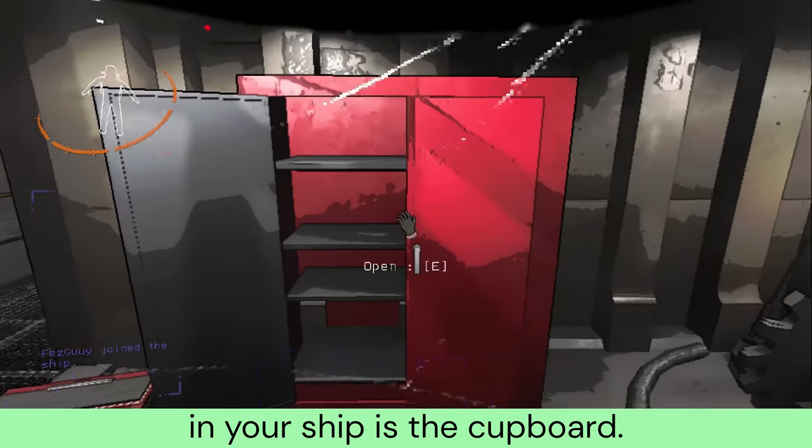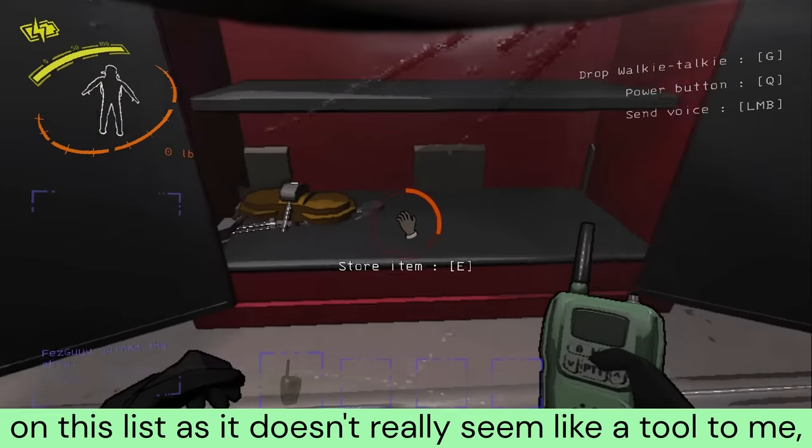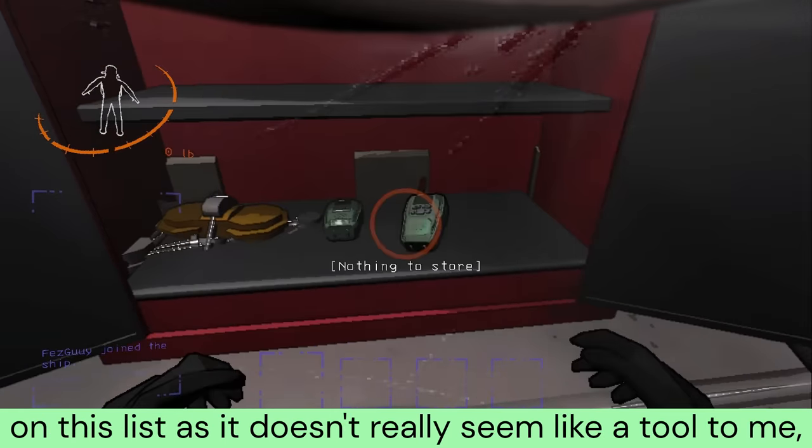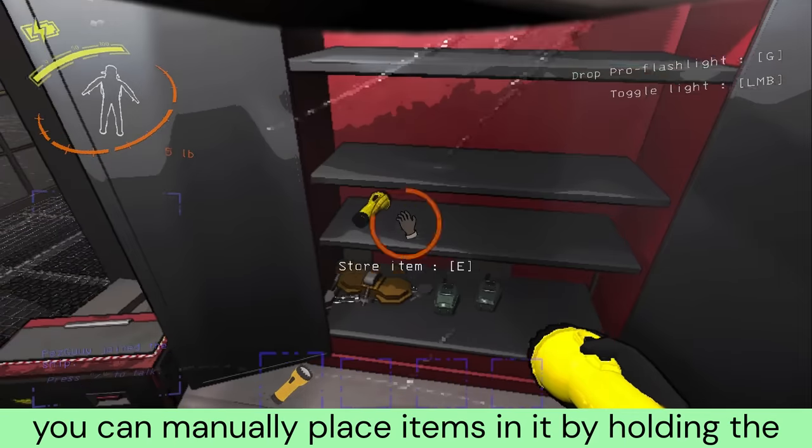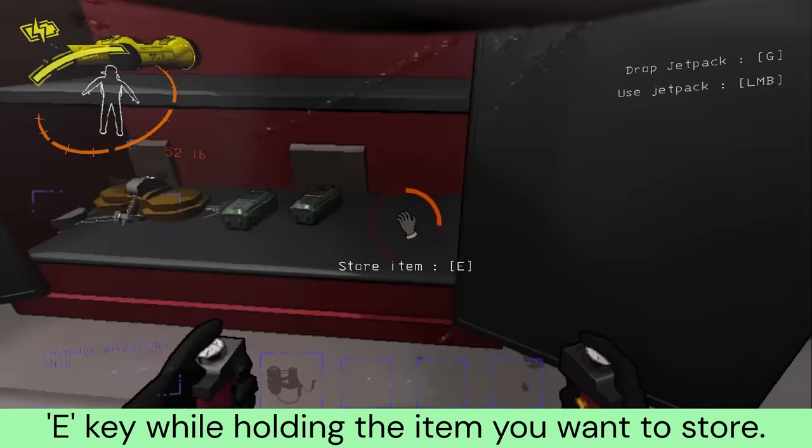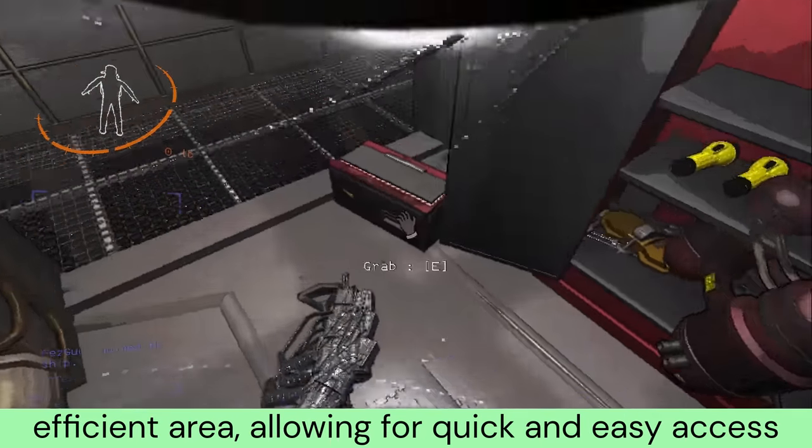The last free tool provided to your crew in your ship is the cupboard. This is because you can manually place items in it by holding the E key while holding the item you want to store. This allows you to organize items in a space efficient area, allowing for quick and easy access to whatever you decide to put in there.